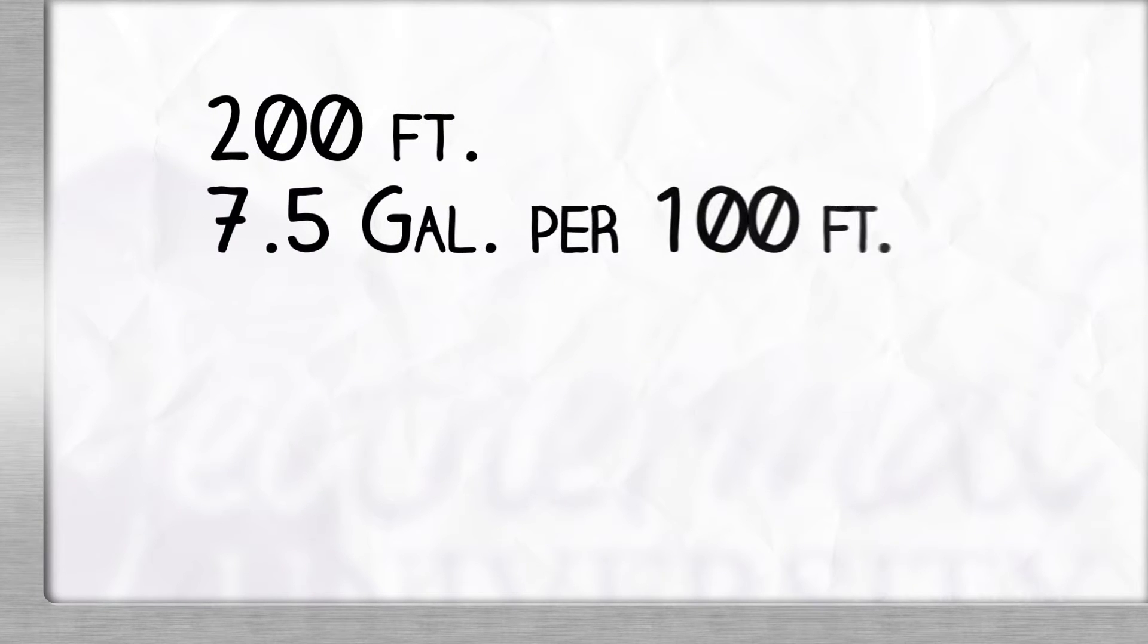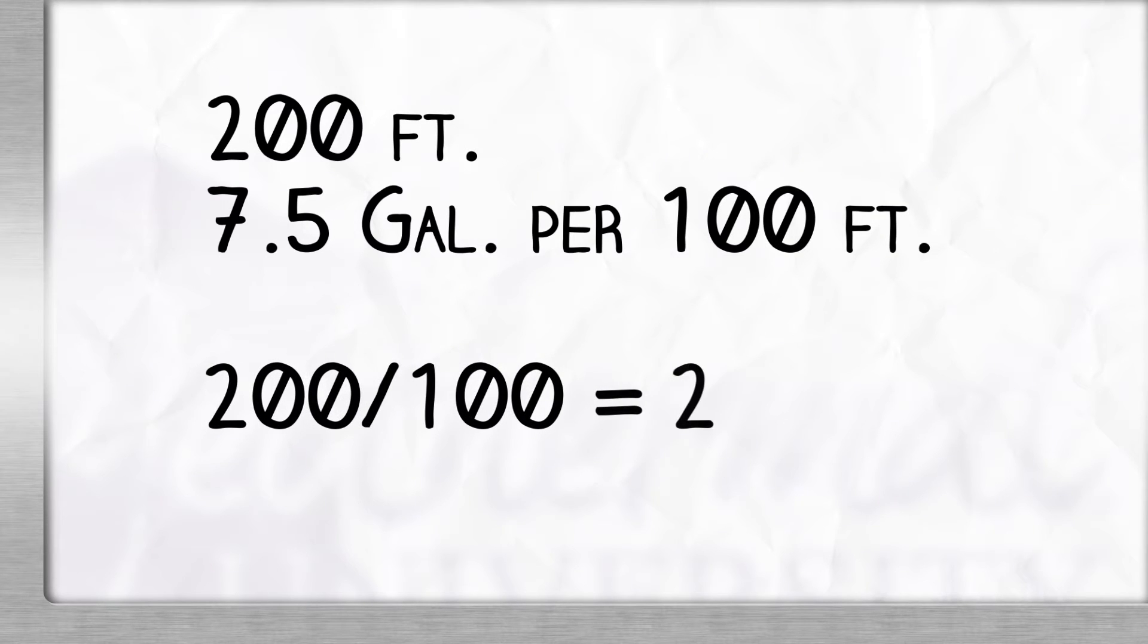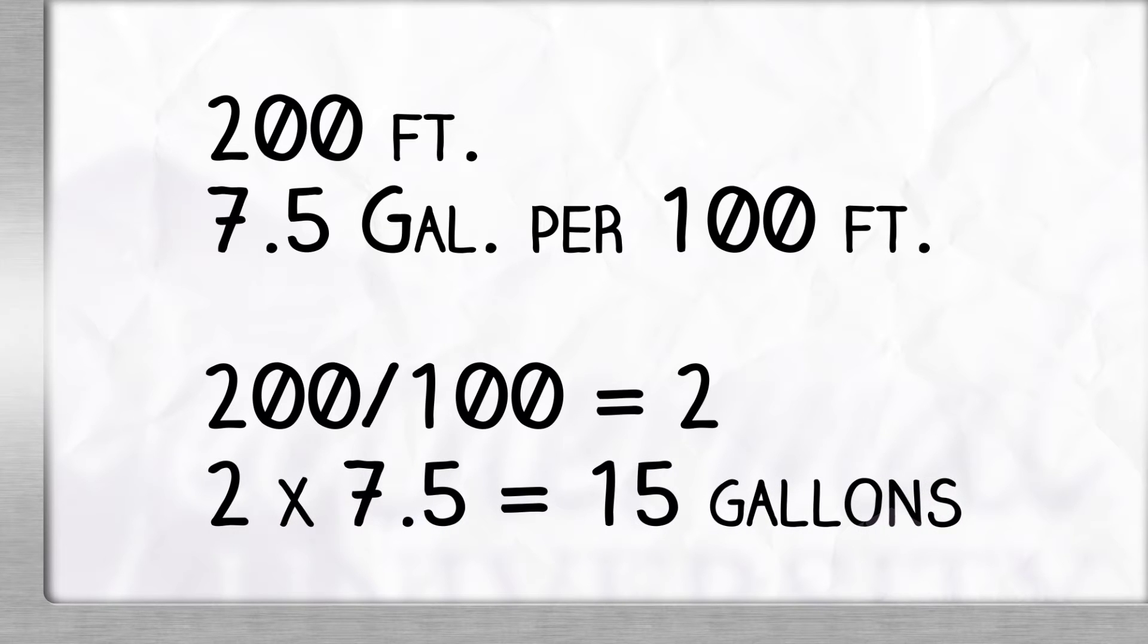So, our calculations are 200 feet of inch and a quarter pipe, 7.5 gallons per 100 feet. 200 feet divided by 100 equals 2. 2 times 7.5 gallons is equal to 15 gallons.